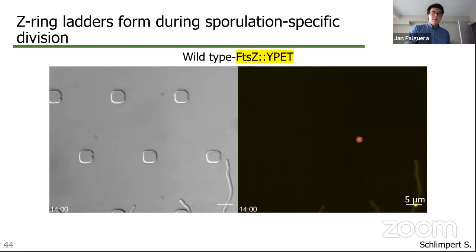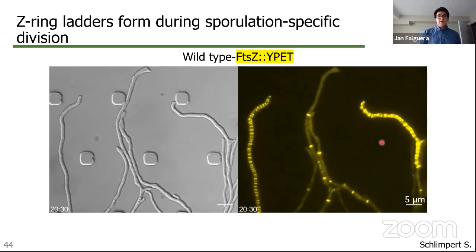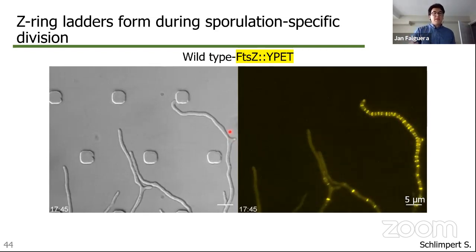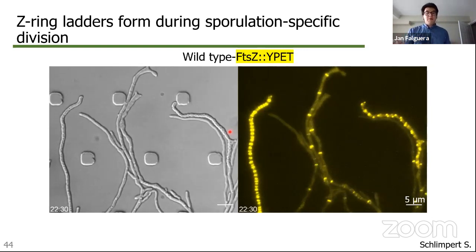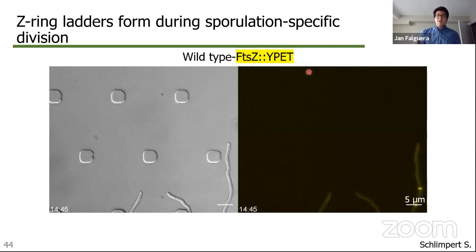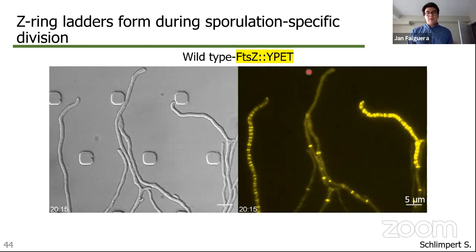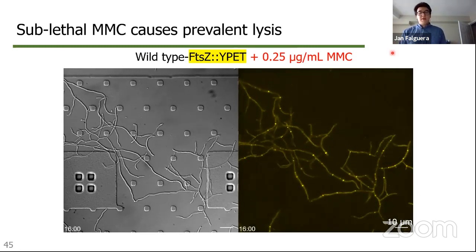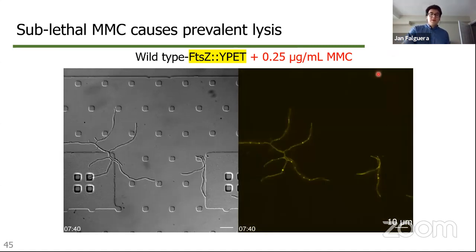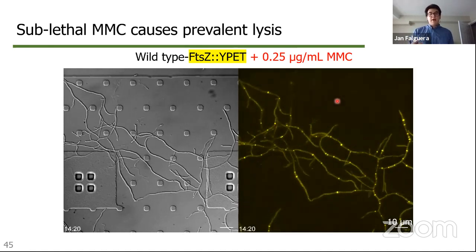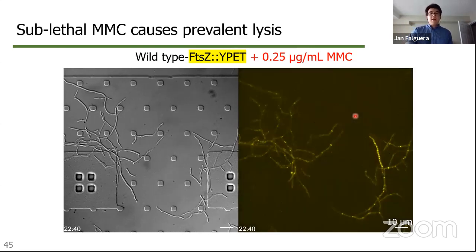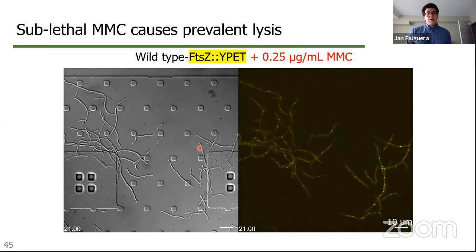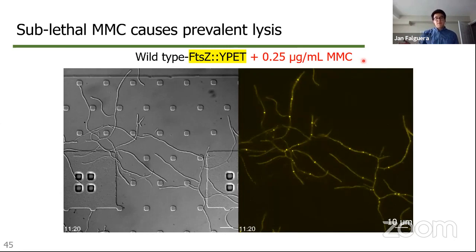On the fluorescent channel, you can see the alignment of Z-rings over time indicating spore formation in that hyphae, and on the DIC channel you can see spores forming as they compartmentalize and round out into individual spore compartments. This video shows the wild type strain expressing fluorescent FtsZ grown in sporulating conditions. Comparing that to a video where the wild type strain is grown in the presence of mitomycin C, we see a stark difference: over time the Streptomyces hyphae do extend, but they are in fact lysing — indicated by hyphae popping in and out of view on the fluorescent channel and literally blowing up on the DIC channel.